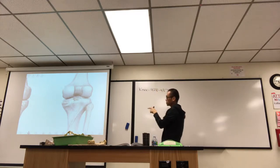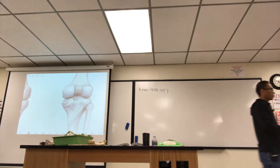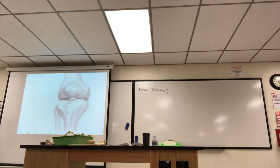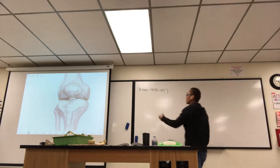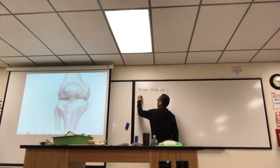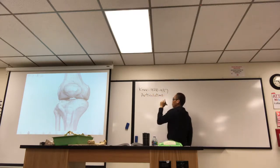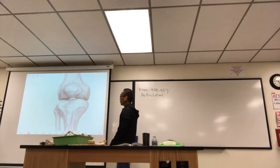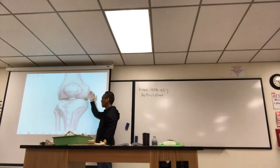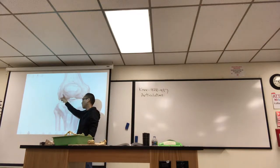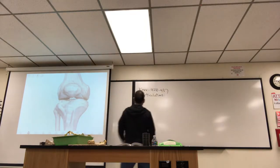This is a view of the knee from the posterior side. If you look at the anterior side, the knee looks like this, just looking at the bones. Let's go through the articulations of the knee. The main ones are the medial condyle of the femur articulating with the medial condyle of the tibia, and the lateral condyle of the femur articulating with the lateral condyle of the tibia. Those condyles are the main articulations of the knee.